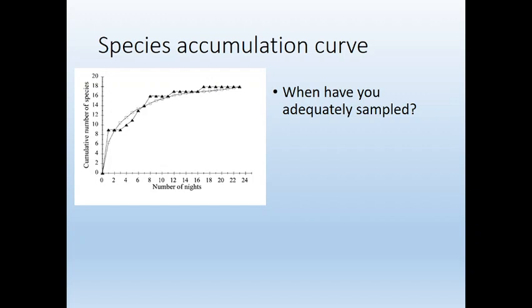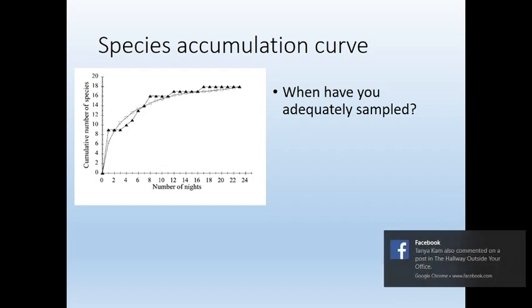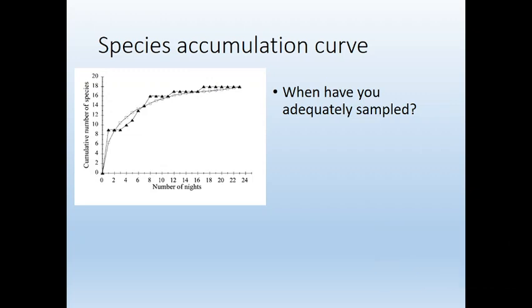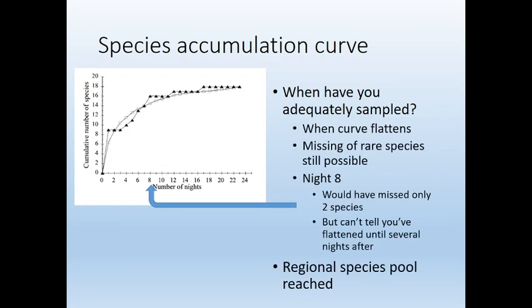You can use these species accumulation curves to figure out when you have adequately sampled. The answer basically lies in when the curve flattens. As you're doing this study, you would go until the curve kind of flattens out. You might still miss a rare species out there, but that's just going to happen.